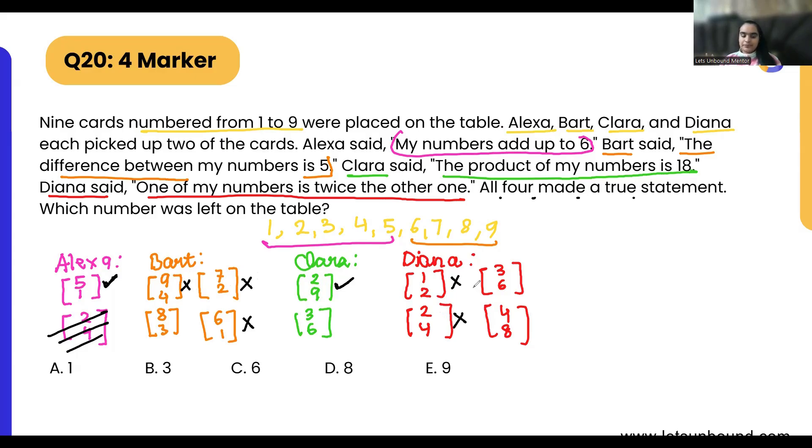Now we are left with Bart. Bart is left with only eight and three. So let's assume Bart is having eight and three. So that means we can remove three from here and we can also remove eight, this set as well. That means this will not work because Diana is not left with any set of numbers.